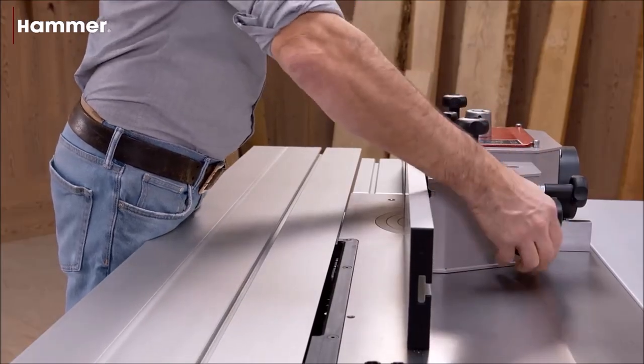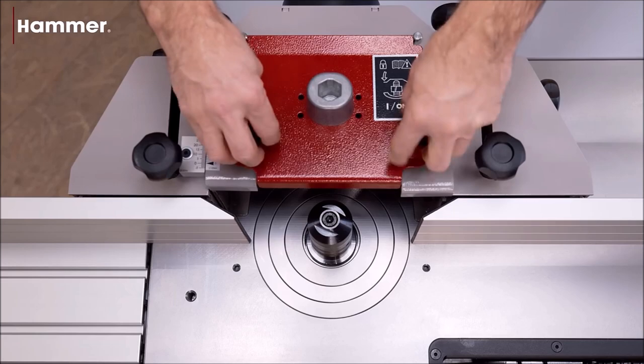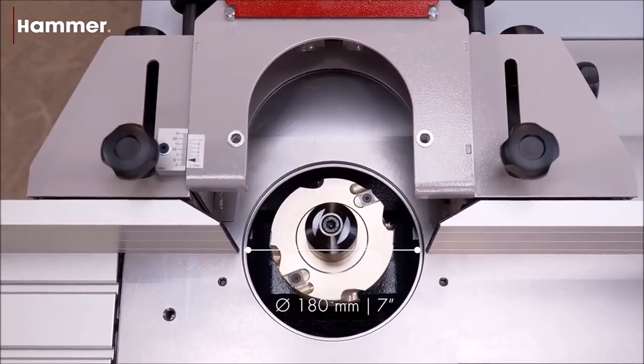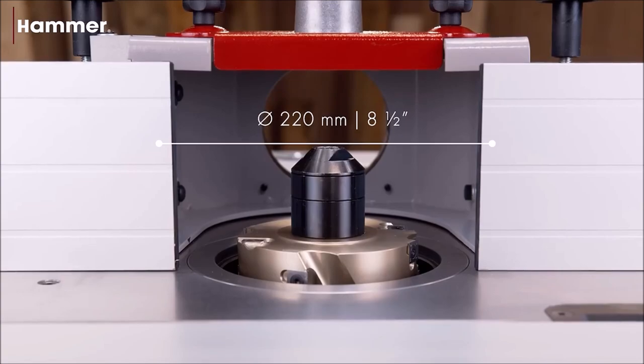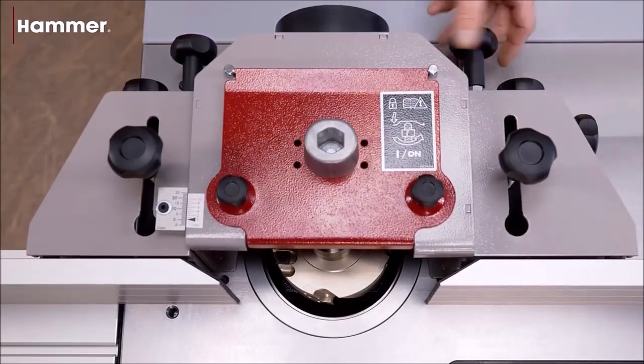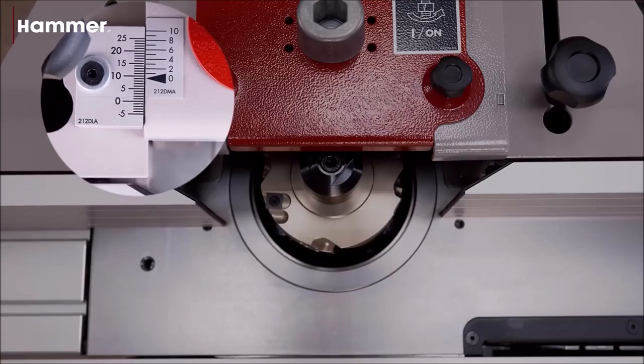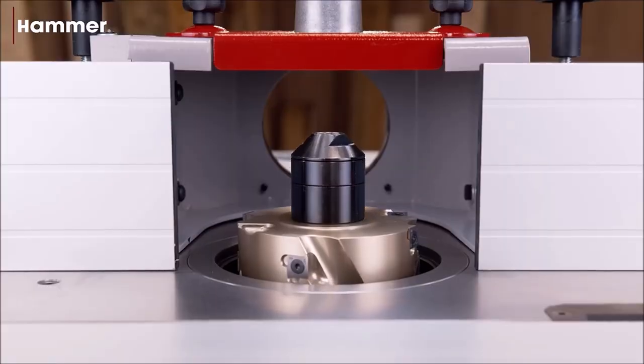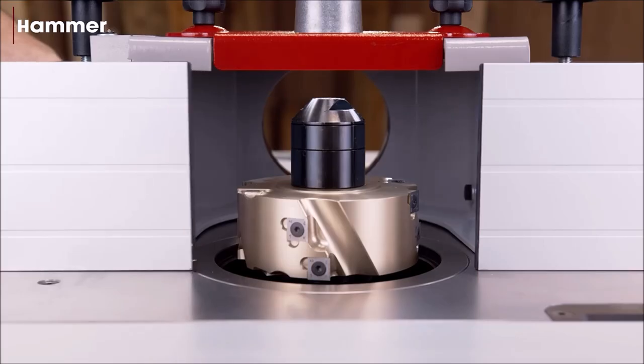The Hammer spindle molder unit guarantees extreme smoothness and precision with four selectable speeds to cover various spindle tool diameters. Safety features include forward and reverse run of the spindle and large dimension poly-V belts for power transmission.